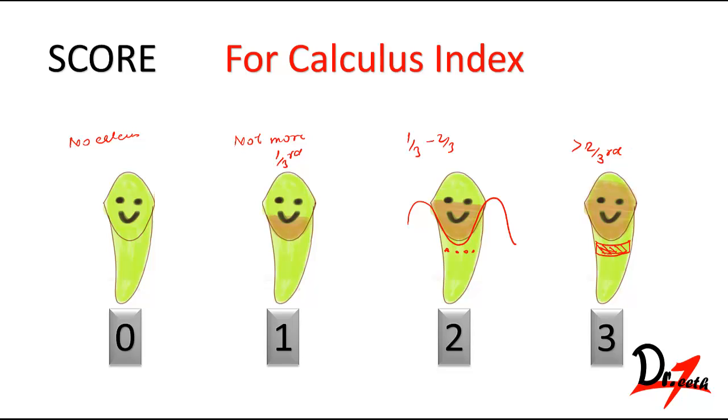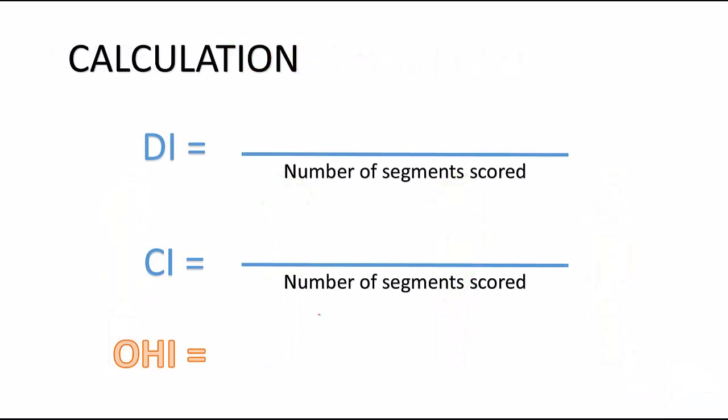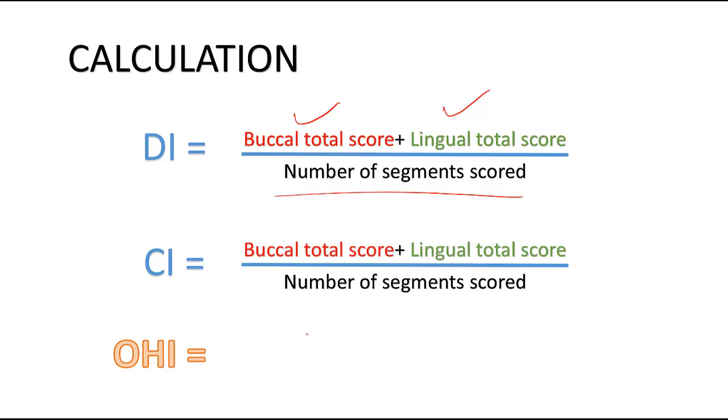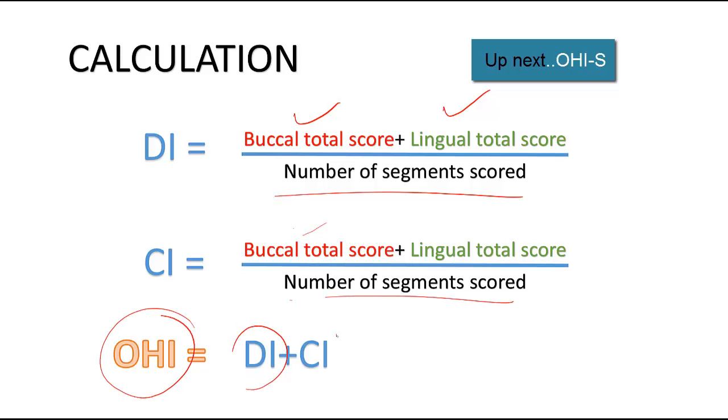The calculation: take the total buccal score, add the lingual total score, and divide by the number of segments scored. Same is done with the CI. For the OHI, we add the DI and the CI.